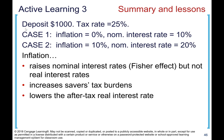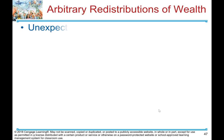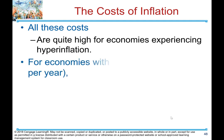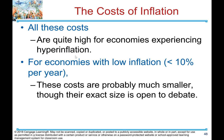Summary and lessons: inflation raises the nominal interest rate (the Fisher effect) but not the real interest rate. It increases savers' tax burdens and lowers the after-tax real interest rate. Unexpected inflation redistributes wealth among debtors and creditors — not by merit, not by need. When the average rate of inflation is high, all these costs are quite high, especially for economies experiencing hyperinflation. For economies with low inflation (less than 10% per year), these costs are probably much smaller, though their exact size is open to debate.